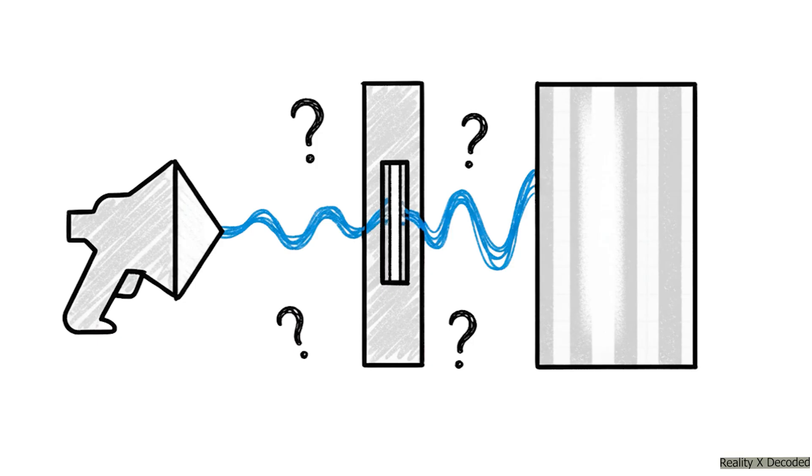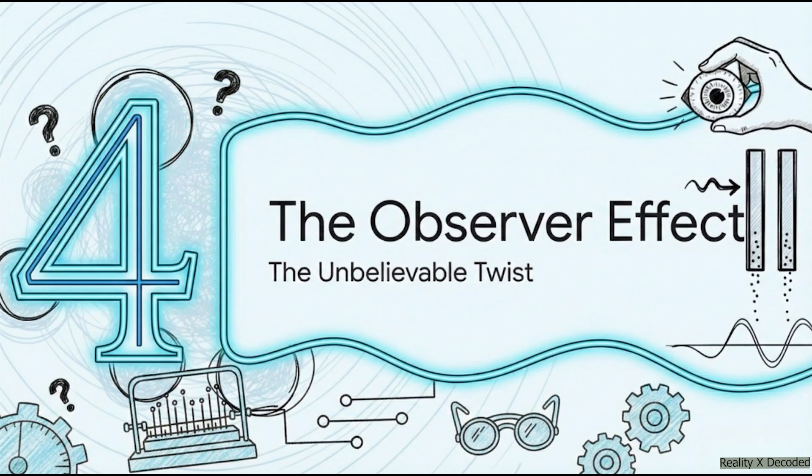This result is the whole mystery in a nutshell. Each individual electron, a single piece of matter, had to have acted like a wave. It had to have gone through both slits at the same time and then somehow interfered with itself. It's a result that just seems to fly in the face of all logic. But if you think that was weird, just you wait. The story gets so much stranger.